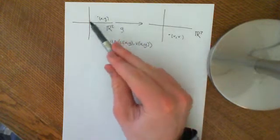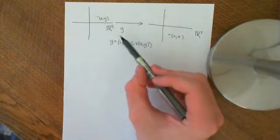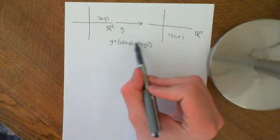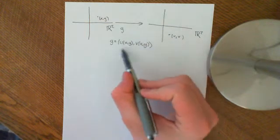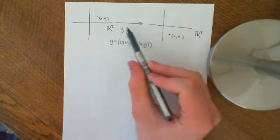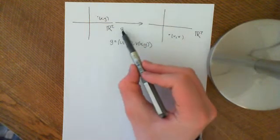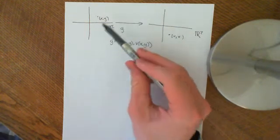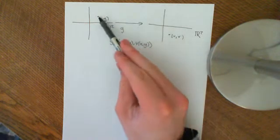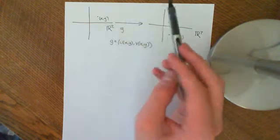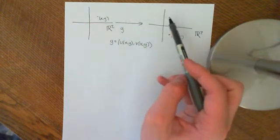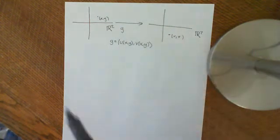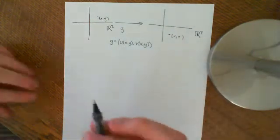They take every point of R² and map it onto a single real number, and together, when put together like this, that gives you the whole function G, and it tells you, given any ordered pair in here, which ordered pair to ascribe it in here.